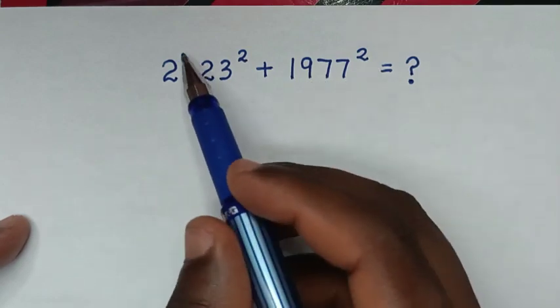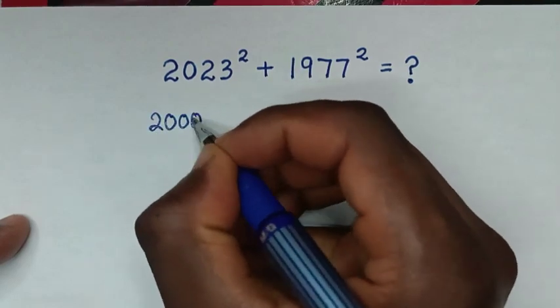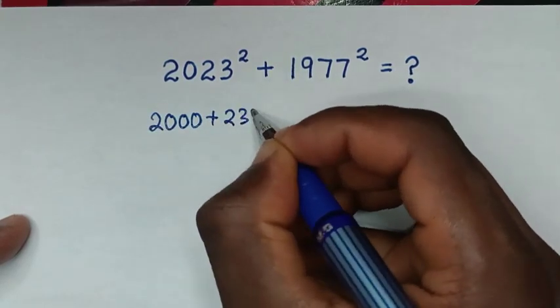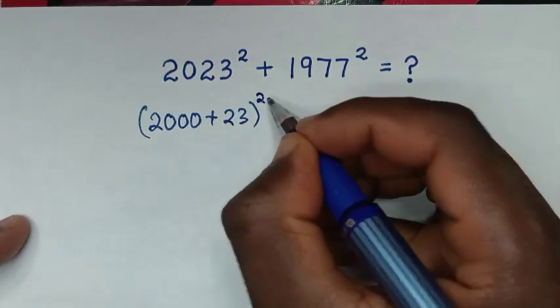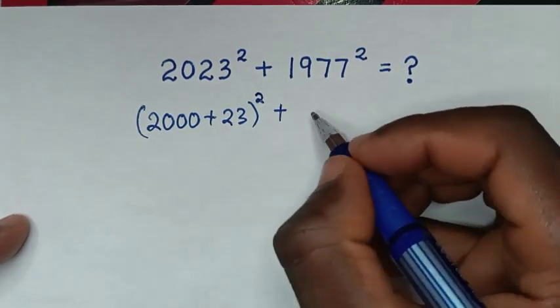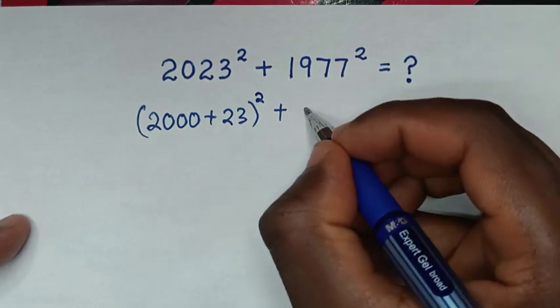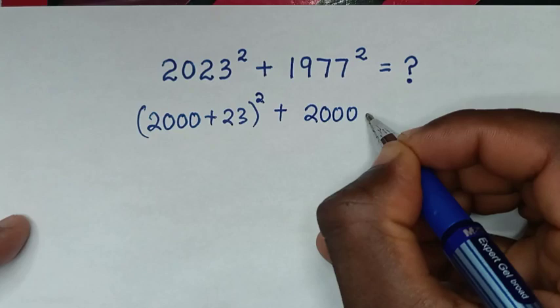So 2023 is the same as (2000 + 23)², and 1977 is (2000 - 23)². Next step, 2000 is common, so we let a equal